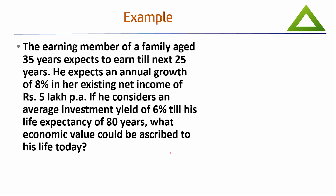Example: the earning member of a family is aged 35 years and is expected to earn for the next 25 years — retiring at age 60. He expects an annual growth of 8% in his existing net income of 5 lakh. He considers an average investment yield of 6% till his life expectancy of 80 years. The question asks: what economic value could be ascribed to his life today?